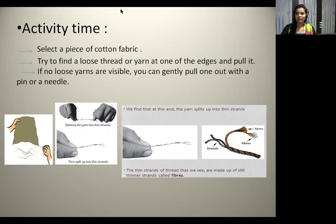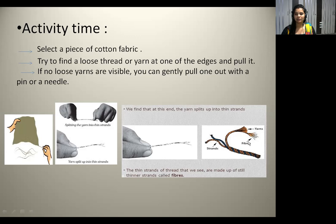It's time for an activity. I would like you all to pause the video and get a piece of cotton fabric from your wardrobe. Select a piece of cotton fabric. Try to find a loose thread or yarn at one of the edges and pull it. If no loose yarns are visible, you can gently pull one out with a pin or a needle. We find that at this end the yarn splits into thin strands.